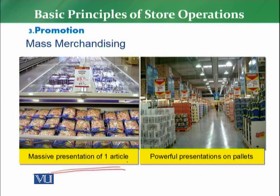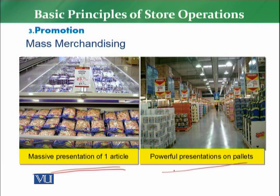This is the number one way: massive presentation of one article. Massive presentation means where any one article is massively presented — it is not mixed or merchandised with any other article. So the customer sees a bulk display and gets the feeling that the retailer has placed this product at a very cheap price, because of the quantity they have displayed. The retailer has actually done mass merchandising, but the customer's reading of it is completely different.